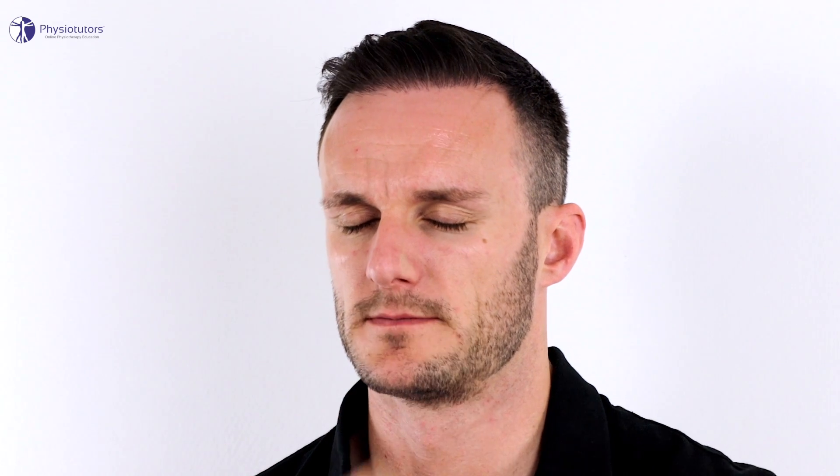The patient is in standing or sitting position and is asked to close the eyes and keep them shut. One nostril is held shut as each nostril is tested separately. Hold the opened alcohol pad under the patient's nose at a couple centimeters distance and ask them to identify the smell. Repeat the same process with the other nostril.